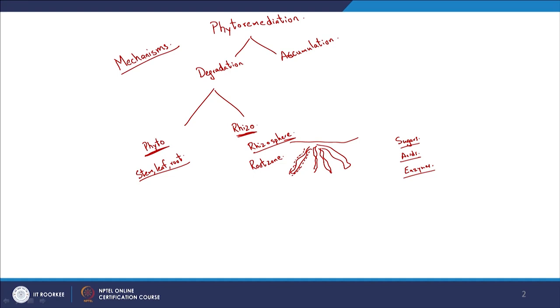In phytodegradation, the plant itself degrades the contaminant after taking it in — it can be present in the stem, leaf, or root where transformation takes place. You can also choose trees such that there is no uptake of the contaminant but only rhizodegradation is promoted. There are some such trees, but obviously there is no one tree for all contaminants — some trees have shown affinity in particular soils and climate conditions for specific contaminants.